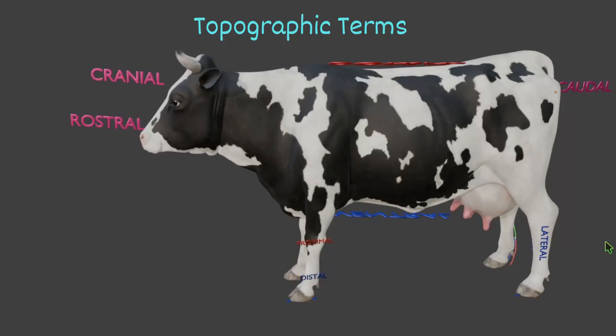Today, in this video, we will discuss topographic terms. To describe the location, position, or orientation of various organs and body parts, certain standard descriptive terms are used in anatomy. These terms are based on the assumption that the animal is in its normal standing posture.